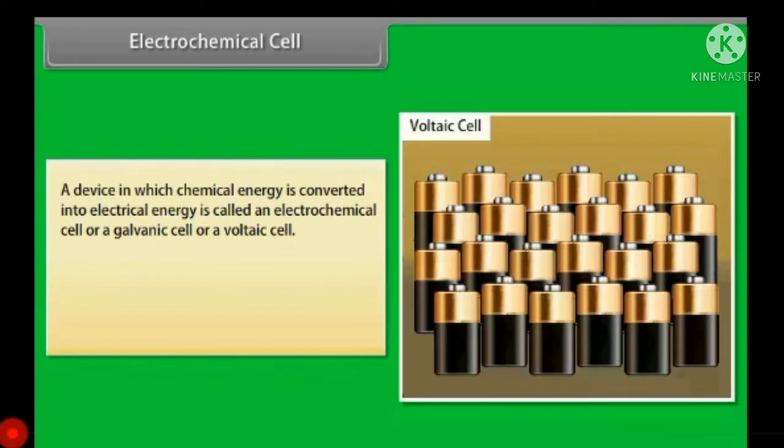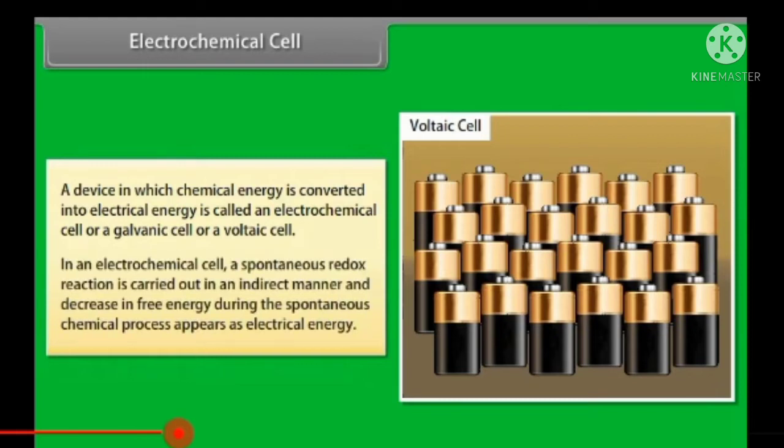Electrochemical cell: a device in which chemical energy is converted into electrical energy is called an electrochemical cell or a galvanic cell or a voltaic cell. In an electrochemical cell, a spontaneous redox reaction is carried out in an indirect manner and decrease in free energy during the spontaneous chemical process appears as electrical energy.